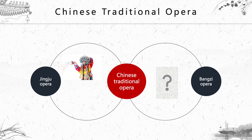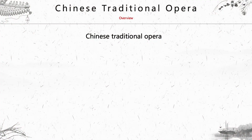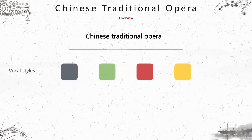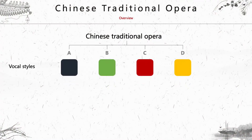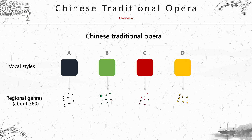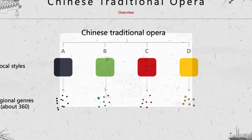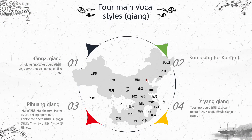What's the relationship between banzi and Peking Opera? To answer this question, we need to look at the classification. Chinese traditional opera can basically be categorized into four main vocal styles, and under each vocal style there are many regional genres. The vocal style is called Qiang in Chinese. Let's go into more detail about the different vocal styles using a map.